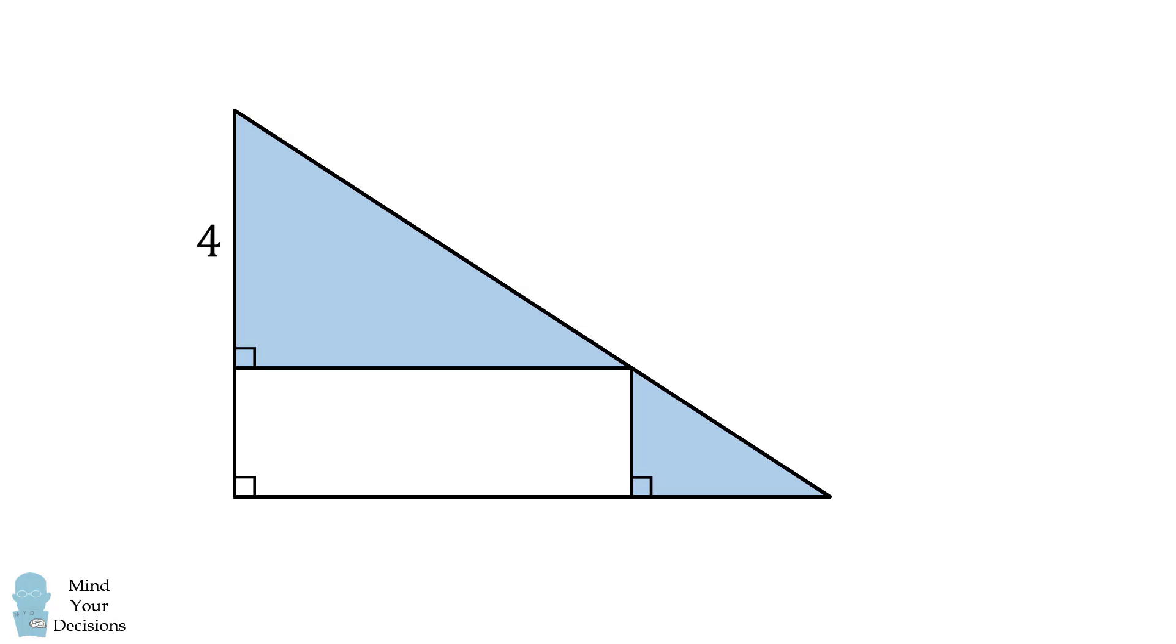Now we are given that this leg is equal to 4, and this other leg is equal to 3. Suppose the rectangle has a horizontal length equal to X, and a vertical length equal to Y. Because these two right triangles are similar, we have 4 divided by X is equal to Y divided by 3. We can then cross multiply to get that X times Y is equal to 4 times 3, which is equal to 12.